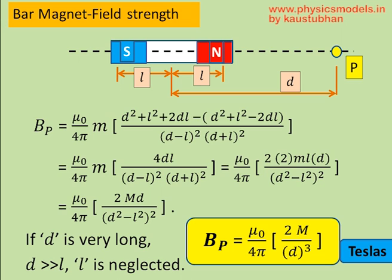Now, often the distance d is very long as compared to the magnetic length of the magnet. So then, in the numerator, you get d. In the denominator, you get d² whole square, which is d to the power 4. So, you get d³ in the denominator. And this is how we get the equation in the yellow.